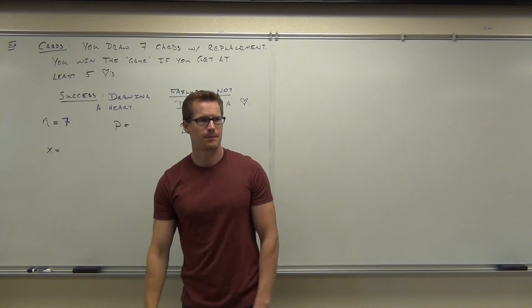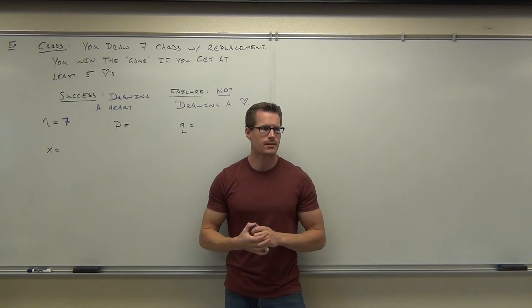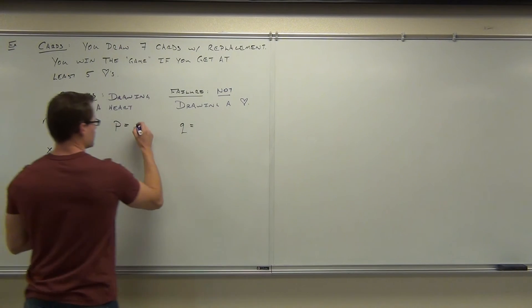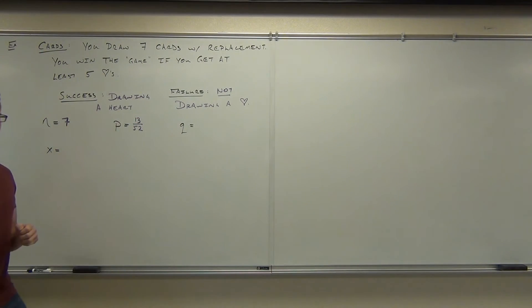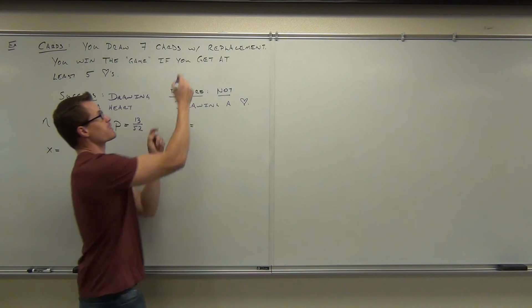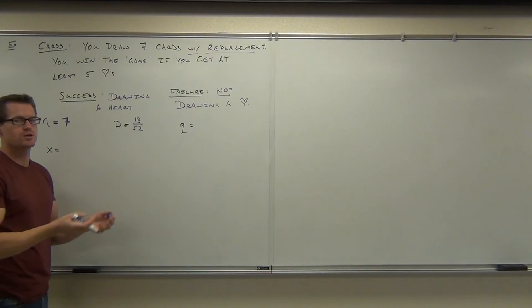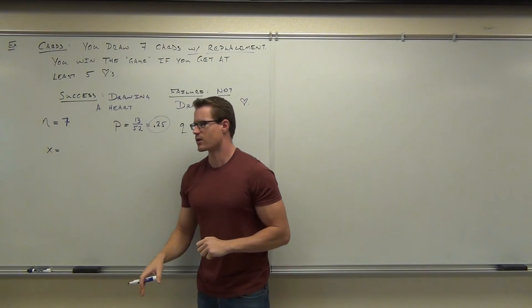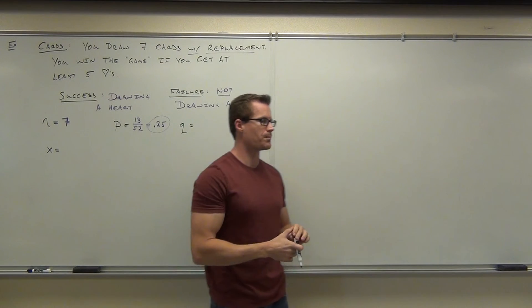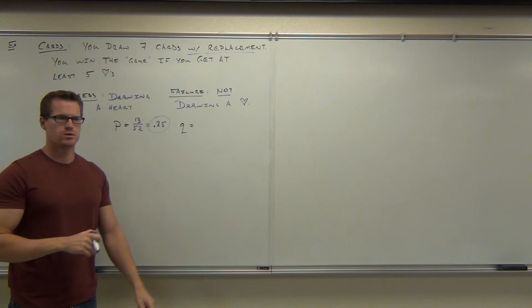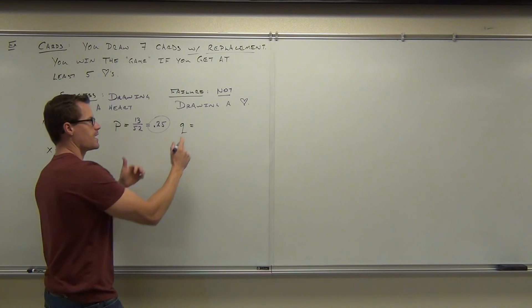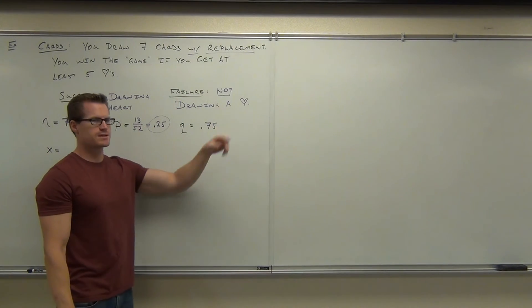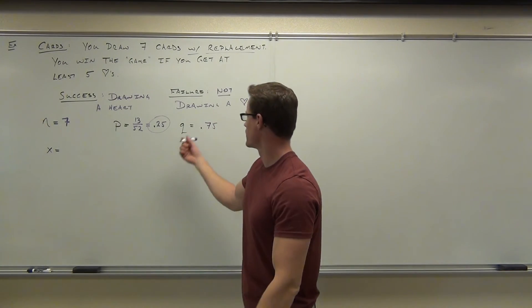What's the probability of drawing a heart in this situation? Assume we have a standard deck. How did you get .25? 13 over 52. Number of hearts out of 52, that's the number of cards. Is this changing every time I draw the card out or not? No, because it's with replacement. I'm putting it back every time. So there's always 13 hearts, always 52 cards. This is going to be .25. If our P is .25, what is my Q? .75. Those things have to add to one.